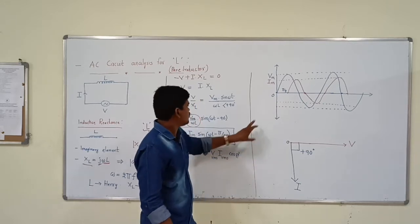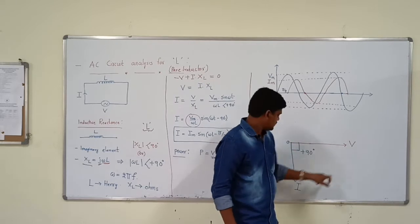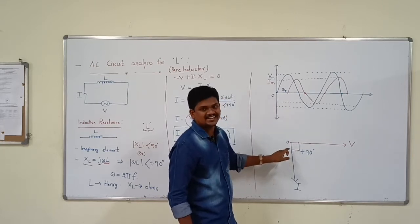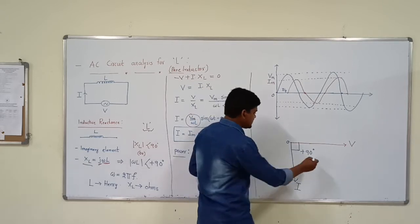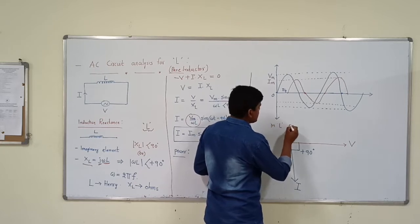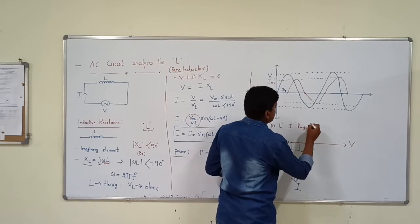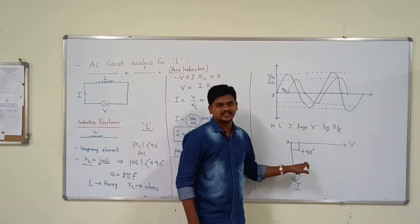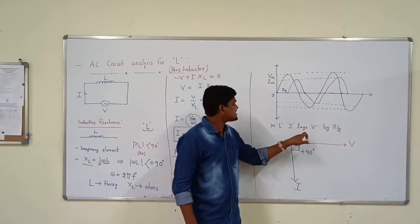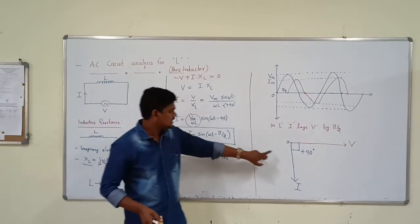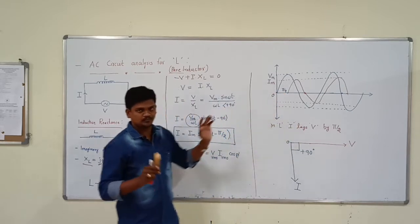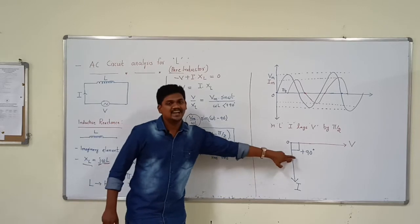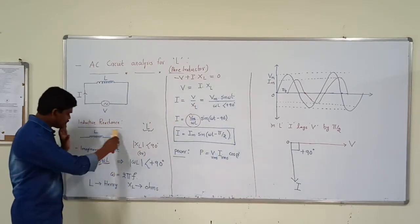In the phasor diagram, voltage V starts at 0, so it is drawn as a straight horizontal line. But current, after 90 degrees, will start — so it lags. Current lags voltage by 90 degrees. This is called lagging. Why lagging? Because minus 90 is there in the equation. Wherever minus is there, it is lagging; wherever plus is there, it is leading.